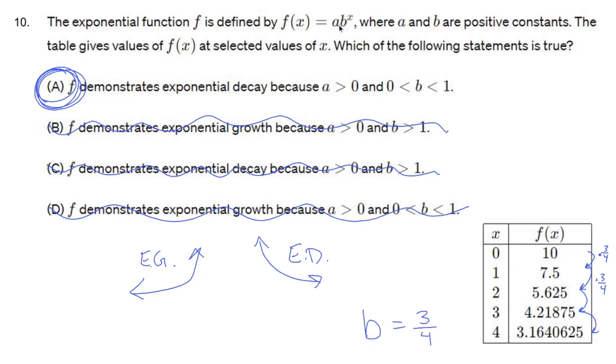So by definition, again, A is whatever it is, it's got to be positive. But if B is greater than one, you're looking at exponential growth. And if B is in between zero and one, you're looking at exponential decay.